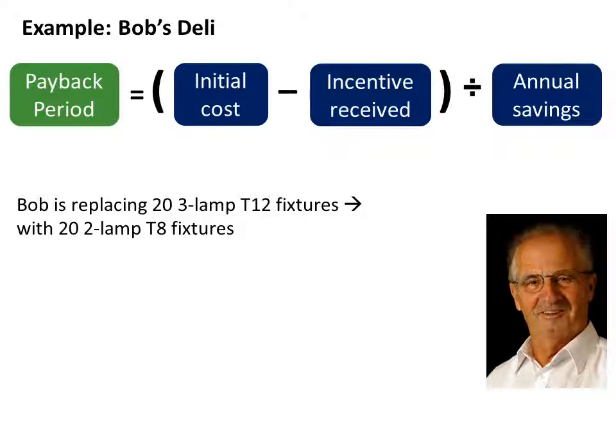Now let's look at an example of a lighting project to see how to calculate payback. Let's say at Bob's Deli, Bob is replacing a quantity of 20 3-lamp T12 fixtures with magnetic ballast with a quantity of 20 2-lamp energy efficient T8 fixtures with electronic ballast. To calculate the payback period for this project, Bob will determine the initial cost of the project, subtract the incentive received, and divide by the annual savings amount.